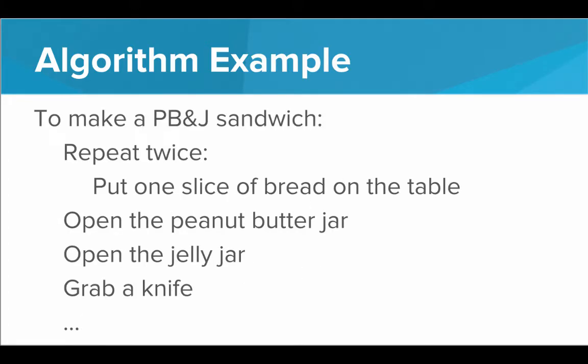We could also give an algorithm to make a peanut butter and jelly sandwich. To make one, you repeat the following twice: put one slice of bread on the table — so now we have two. Now open the peanut butter jar, open the jelly jar, grab a knife, and so on. We give very deliberate, step-by-step simple instructions to solve a problem.